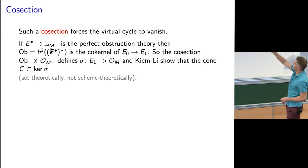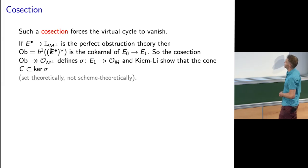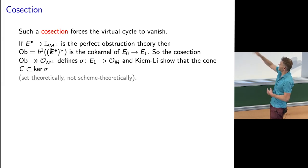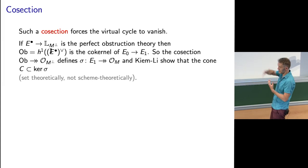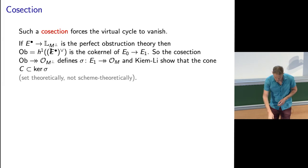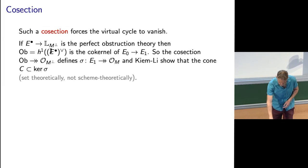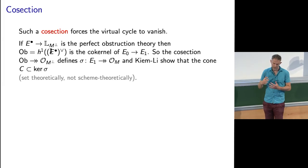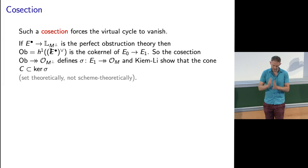So ob is the bit that the section is essentially not seeing to first order as you move off the moduli space. The cone lies in the kernel of the map from E1 to ob. This is just saying that to leading order, to first order as you move off the moduli space, the equations lie in the kernel of the co-section and in the kernel of the map from E1 to the obstruction sheaf.